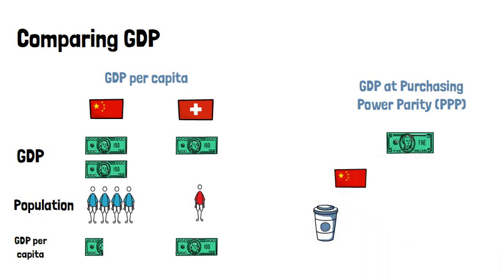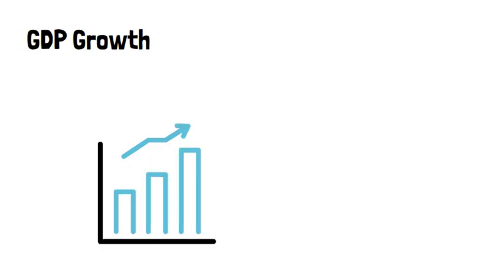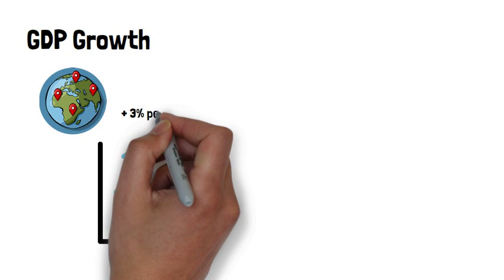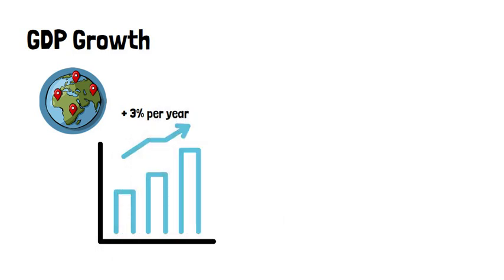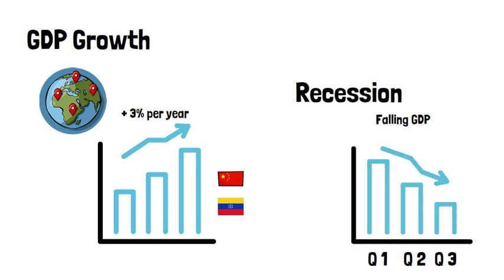Comparing GDP between countries gets difficult if price levels vary a lot. Five dollars in China will buy you a lot more cups of coffee than in Switzerland. We can calculate GDP in both countries after taking into account these differences in price levels, and this is called GDP at purchasing power parity. An increase in GDP usually indicates that the standard of living is rising. Since the year 2000, global GDP has been increasing by nearly 3% per year. Some countries have grown faster, others slower. When the GDP in an economy is falling for two quarters in a row, it is in a recession.